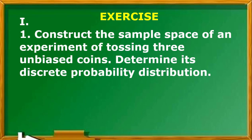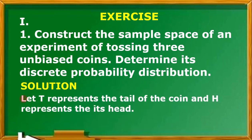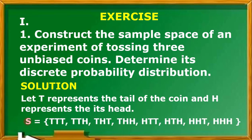For Roman numeral 1, number 1, construct the sample space of an experiment of tossing 3 unbiased coins. Determine its discrete probability distribution. For the solution, we let T represent the tail of the coin and we let H represent its head. These are the elements in the sample space S.